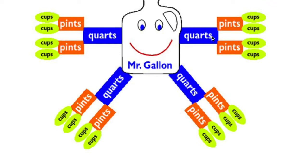And let's count how many pints go into the whole gallon. So there are one, two, three, four, five, six, seven, eight pints in one gallon.